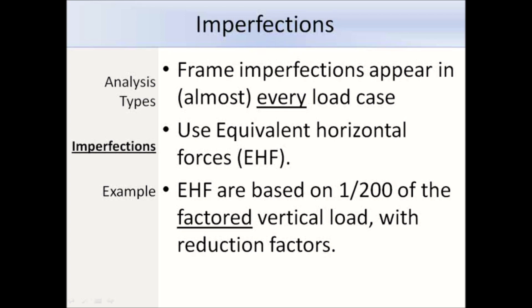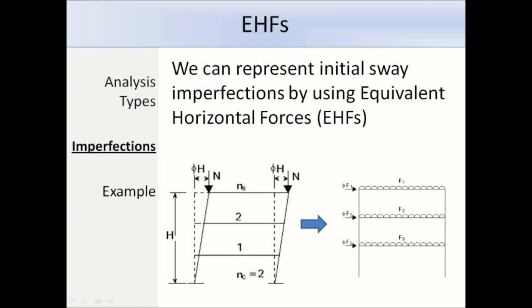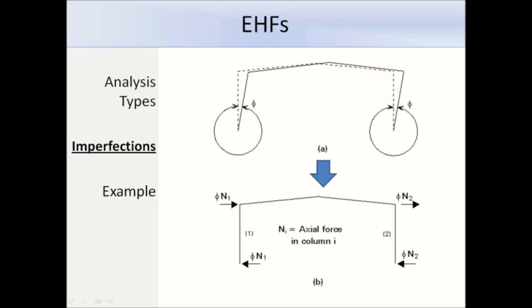We can represent initial sway imperfections by using equivalent horizontal forces. On the left is a frame which is out of plumb, which would be quite difficult to analyse since all the node positions would have changed. On the right we use equivalent horizontal forces to model the frame as if it was perfectly vertical, which is definitely easier. These equivalent horizontal forces are quite similar to the notional horizontal forces that you would have used in BS 5950. Here is another diagram showing that rather than model a portal frame out of plumb, we can simply model the frame as vertical with the addition of the equivalent horizontal forces.